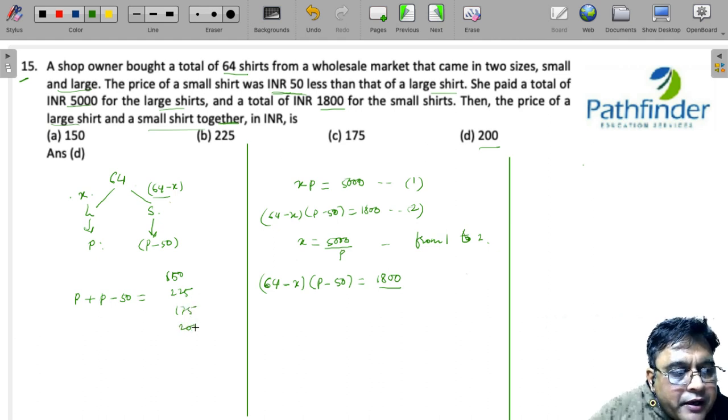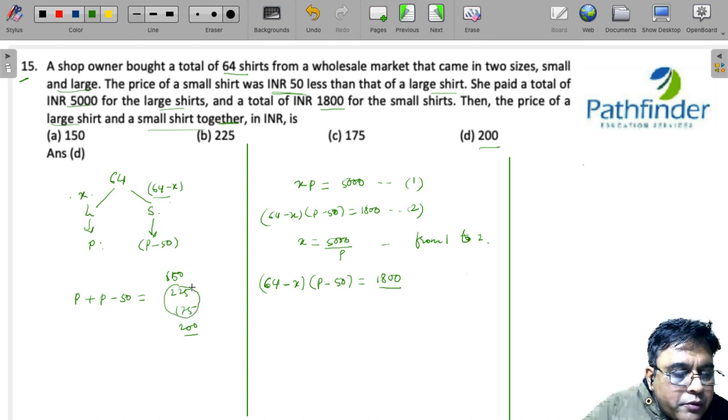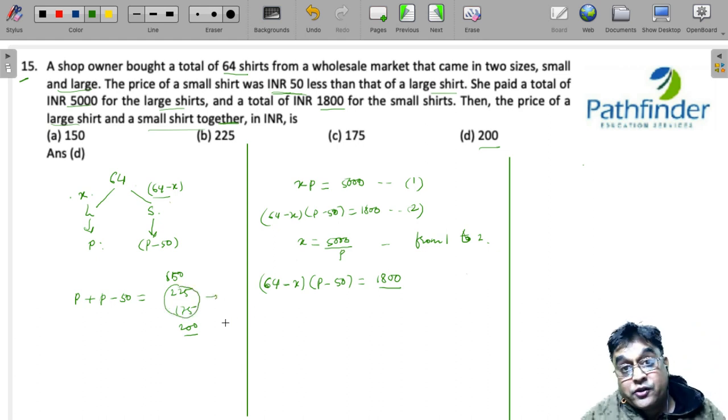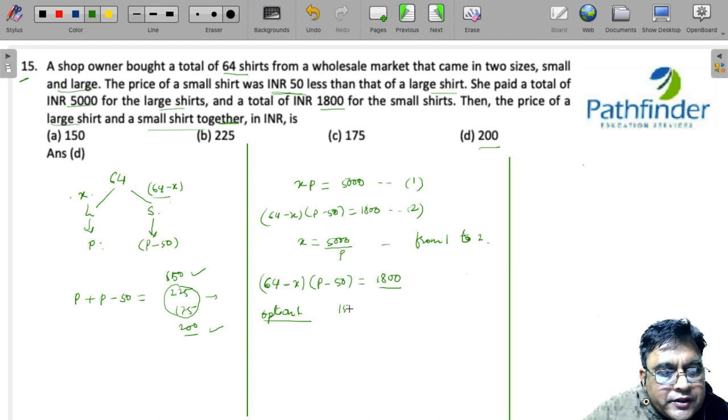Now I immediately rule out these two options because they are giving me answers in fractions, which is possible but I will not try using these options. I will try option one and option four for the first time. So if option one is my correct answer, the value of the two prices is 150.